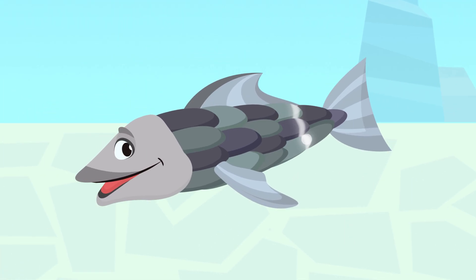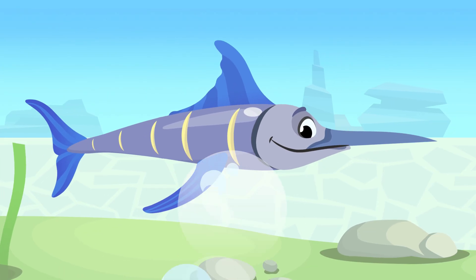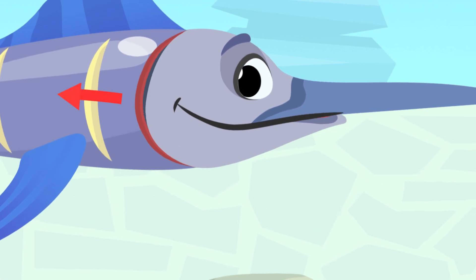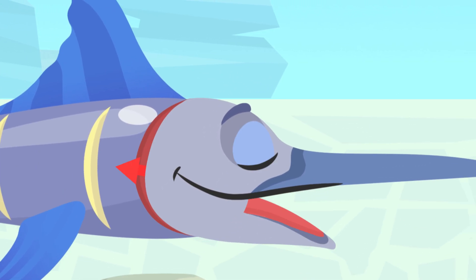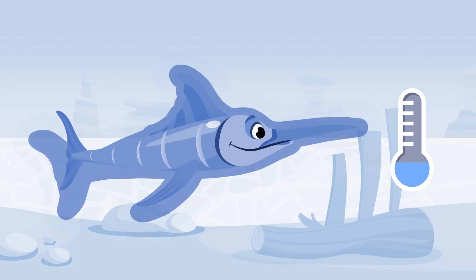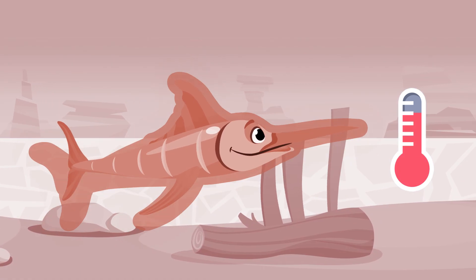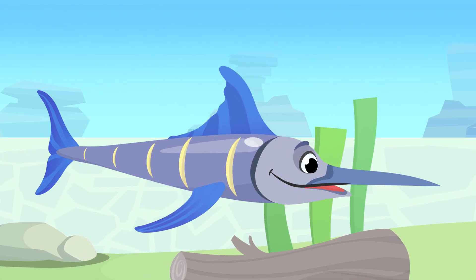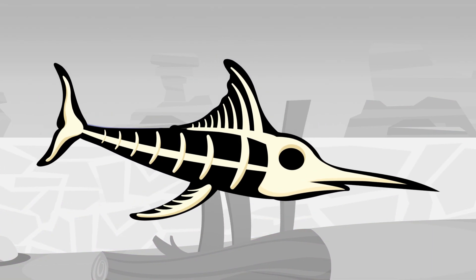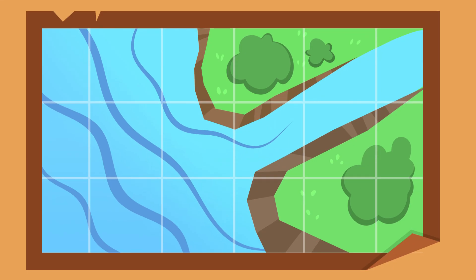bodies are covered in scales. Because they are aquatic animals, they breathe through their gills. They are cold-blooded animals, which means their body temperature varies depending on the water, and they have a simpler skeleton than other vertebrates.